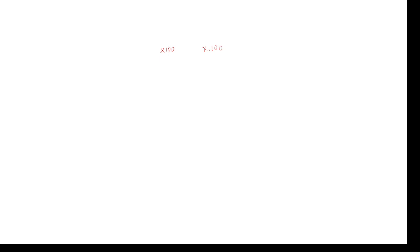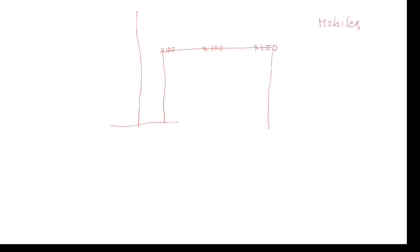If the data is uniformly distributed — for example, if you take one company designing mobiles: first day they design 100 mobiles, second day 100 mobiles, third day 100 mobiles. So for a mobile designing company, we can see the data is uniformly distributed. In this case, what is the average probability to design mobiles? That is the case here — the data is uniformly distributed.